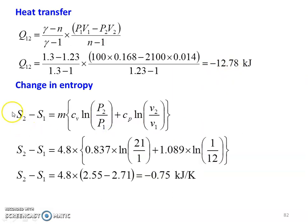The change in entropy for the polytropic process: S2 minus S1 equal to M into Cv logarithmic of P2 by P1 plus Cp into logarithmic of V2 by V1. So S2 minus S1 equal to 4.8 into 0.837 into logarithmic of 21 by 1 plus 1.089 into logarithmic of 1 by 12. Calculating S2 minus S1 equal to 4.8 into 2.55 minus 2.71 equal to minus 0.75 kilojoules per Kelvin.